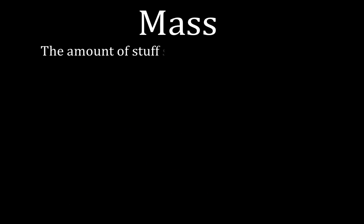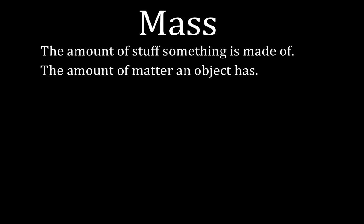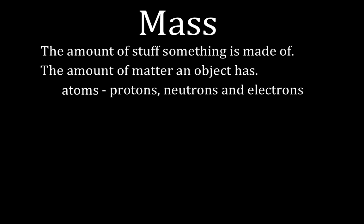Now, what about mass? Mass is the amount of matter that an object has. What is all that matter made of? Atoms. And what are atoms made of? Protons, neutrons, and electrons. So in a sense, it's a measure of how many protons, neutrons, and electrons you have. But the definition is: mass is the amount of matter that an object has.